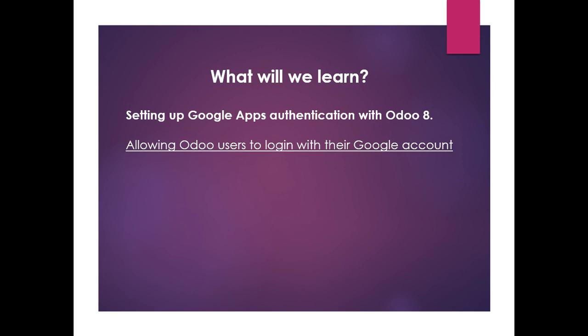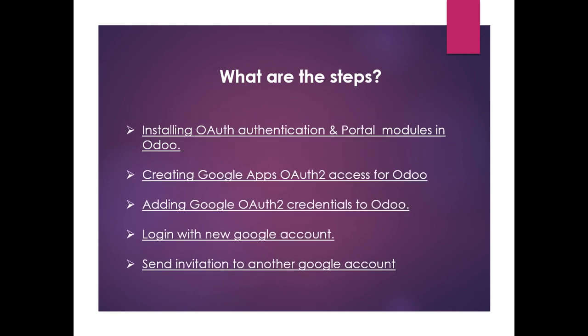We will learn how we can set up Google Apps authentication with Odoo. The reason is to allow all users to login with their Google account. The steps are: first, install the authentication and portal modules in Odoo; second, create Google Apps authentication access for Odoo; third, add the Google authentication credentials to Odoo.